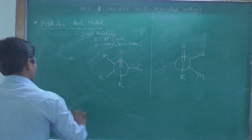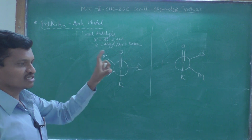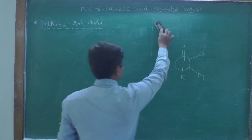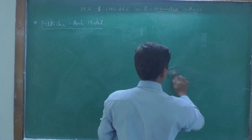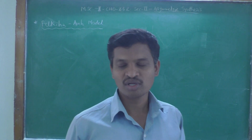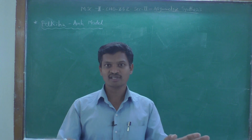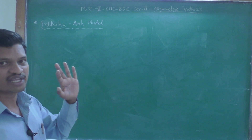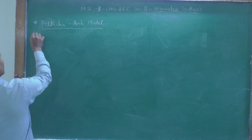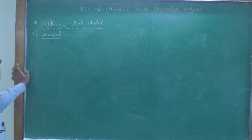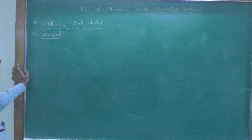The Felkin-Anh model can be applied in different ways depending on the substrate: whether the chiral aldehyde or ketone has a metal ligand adjacent, or whether electronegative atoms are present. Accordingly, there are three basic rules. Today we are going to see the first — the general Felkin-Anh model — which applies when there is no electronegative atom in the substrate (except the carbonyl group) and no metal or ligand group attached.